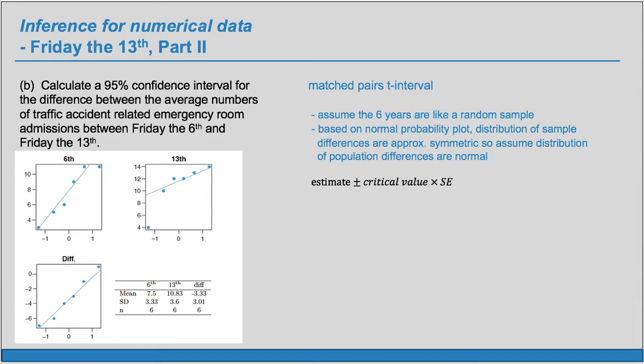For our confidence interval, it's always going to have this form: our estimate plus or minus the critical value times the standard error. Here, if we want to put some symbols in, we can say our estimate is the X bar of the differences, and the standard error is given by the standard deviation of the differences over the square root of N. If we plug in some numbers here, we plug in the negative 3.33, and we plug in the 3.01 for S and the 6 for N. We have our degrees of freedom as N minus 1, so that's 5.